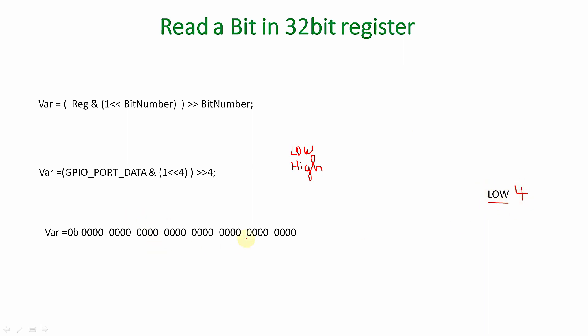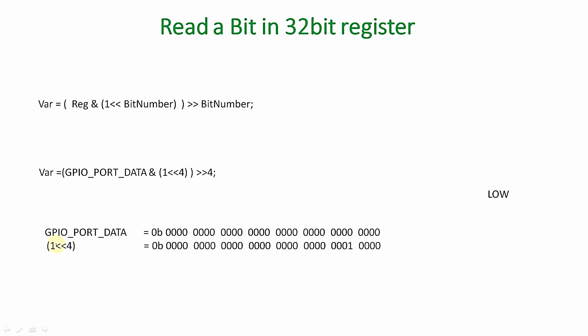Let's assume we have a low signal at bit number 4 of the GPIOPORTDATA register. You can see this is the 0th bit of the register, and the 31st bit is at the other end. The value of 'var' is initially zero, and GPIOPORTDATA is initially having the value zero. Bit number 4 is initially zero. '1 left-shifted by 4' gives us a 32-bit value with only bit position 4 set to 1 and all other bits zero.